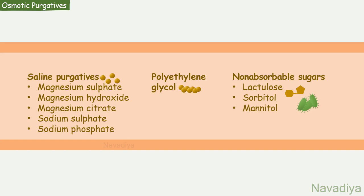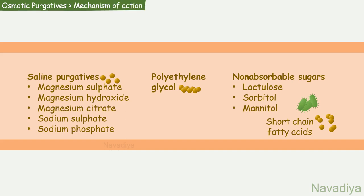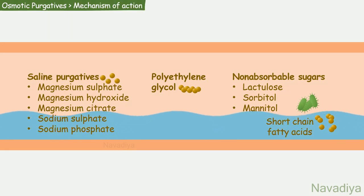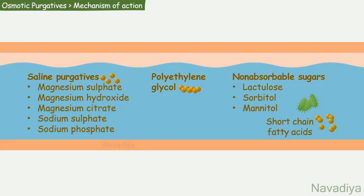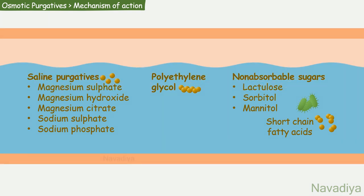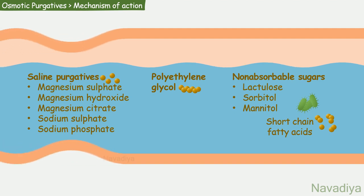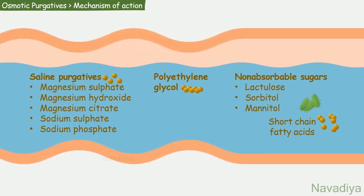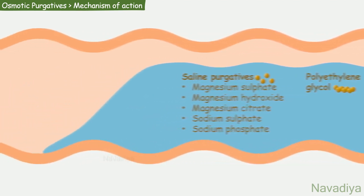Intestinal bacteria degrade these sugars to short-chain fatty acids which are osmotically more active. Now let's see their mechanism of action. They retain water in the lumen by their osmotic activity. This causes distension of the bowel. Magnesium-containing preparations also cause release of cholecystokinin on top of this. All of this results in increased peristaltic activity leading to bowel evacuation.